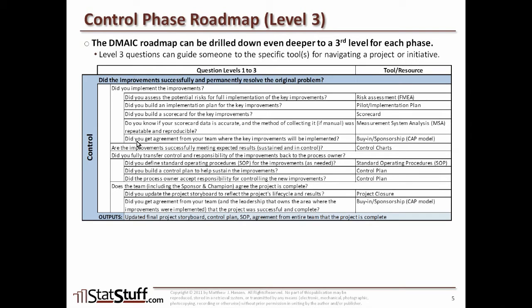The last question in this group is: did you get agreement from your team on where the improvements will be implemented? You need to secure the sponsorship necessary to make sure the team agrees not just that improvements will be implemented, but where they'll be implemented and the entire plan for how they'll be rolled out. Once you can answer yes to these third-level questions, you should be able to say the improvements are fully implemented. Then move to the next second-level question: are the improvements successfully meeting expected results? Are they sustained and in control? This is where control charts can be used to answer that definitively.